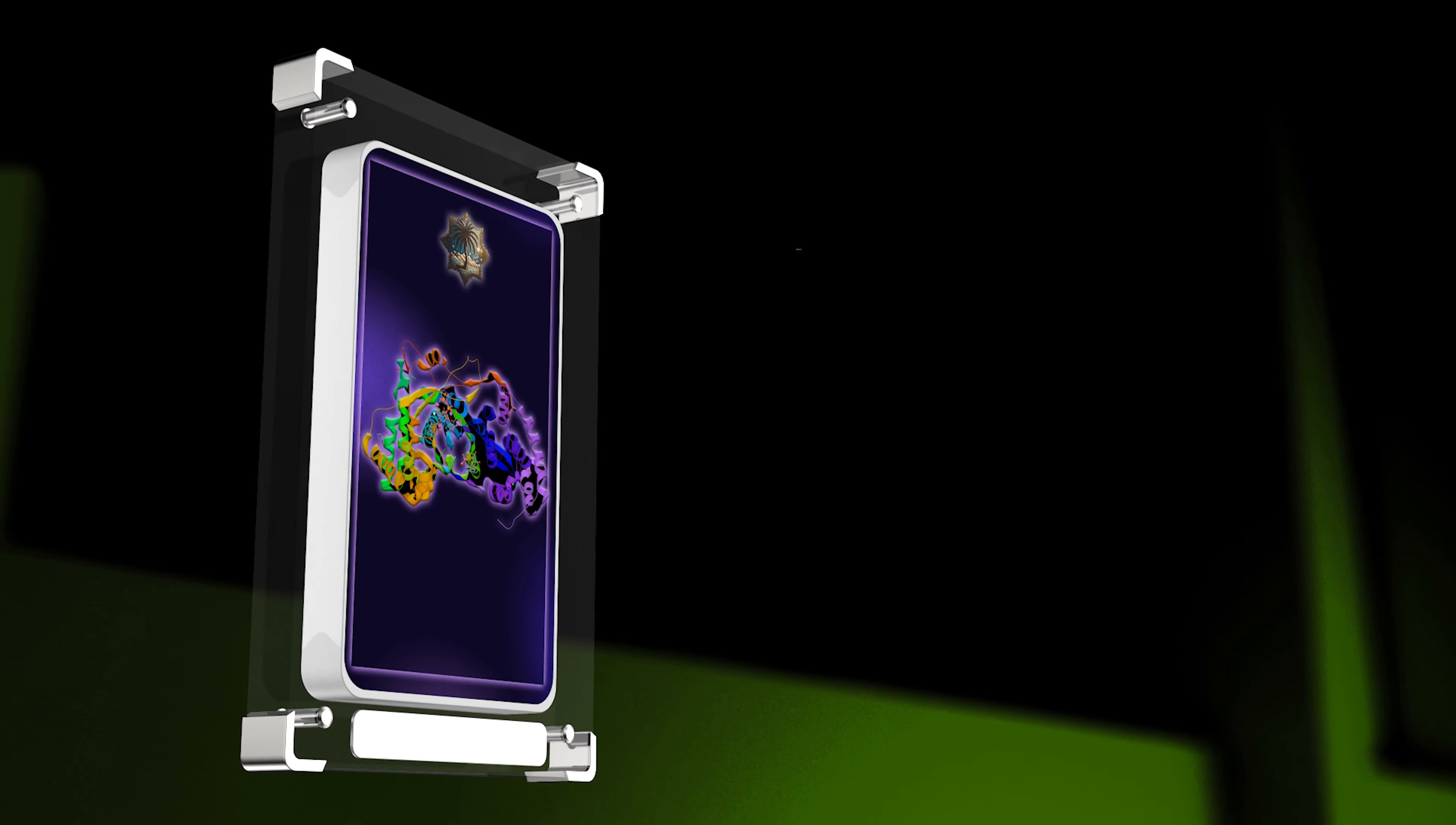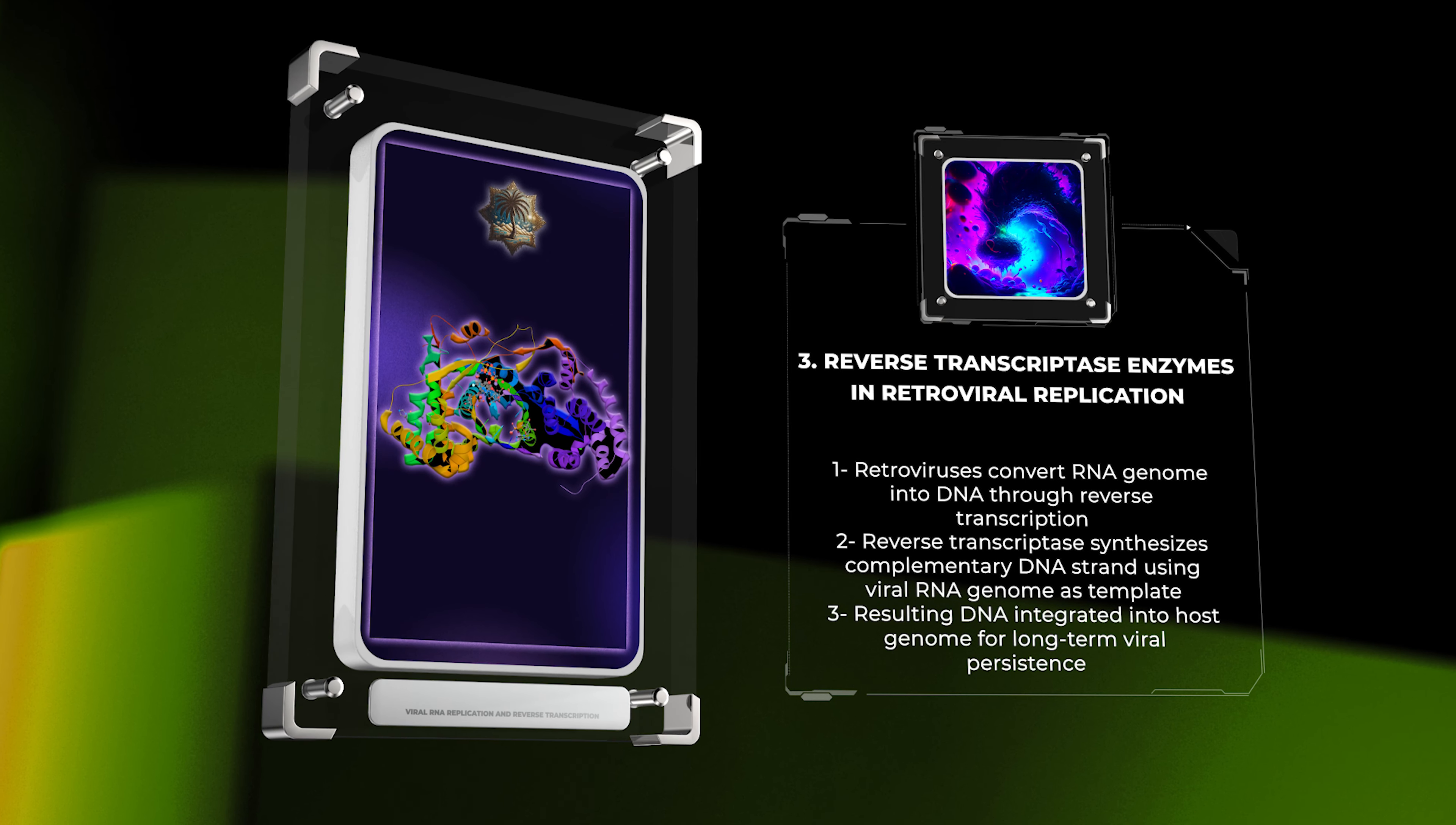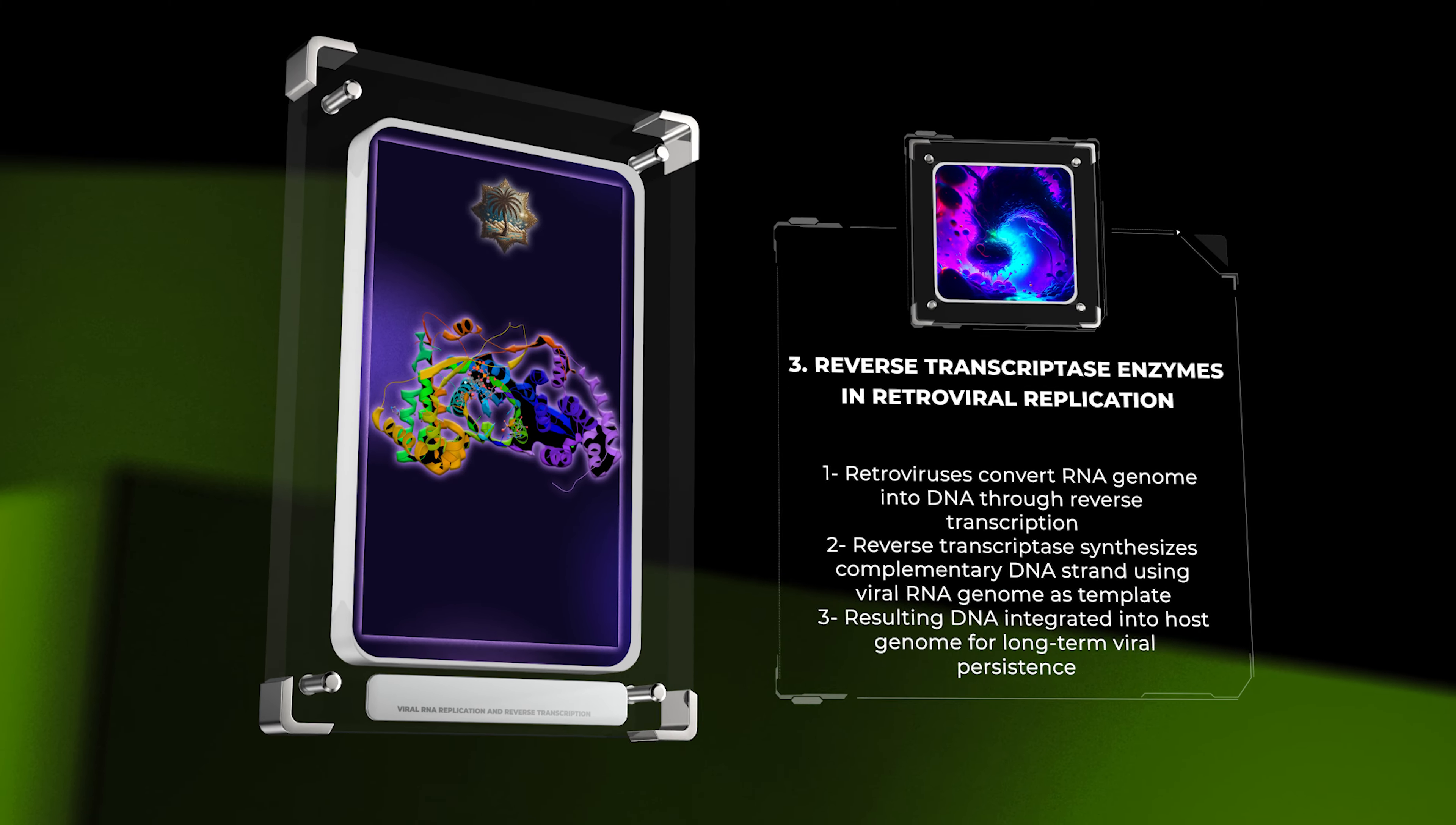Retroviruses can convert their RNA genome into DNA using reverse transcription. This process involves the enzyme reverse transcriptase, which synthesizes a complementary DNA strand using the viral RNA genome as a template. The resulting DNA is integrated into the host genome, leading to long-term viral persistence.